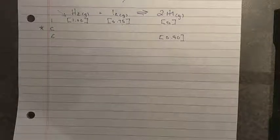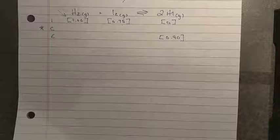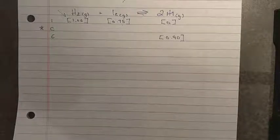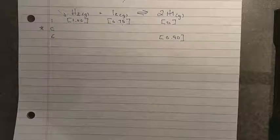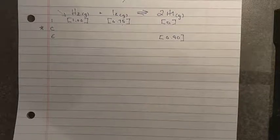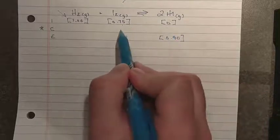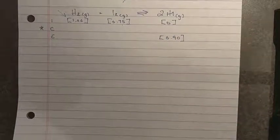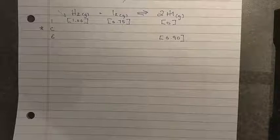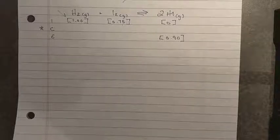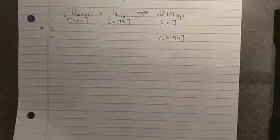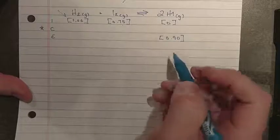In our starting ones here, we will be given an equilibrium concentration to resolve at least one of the changes. Once you have one change in concentration value, and in this case we'll get it here for hydrogen iodide, we can extend that to make predictions about all other changes. So in these starting ones, expect to find enough information to get at least one equilibrium concentration out of the expression so that you can start to fill out your ICE table.